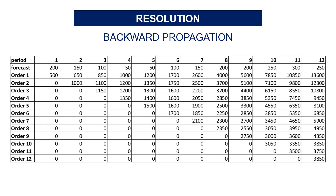For the backward calculation, we use the table here to conduct a visual resolution of the algorithm using the rules explained before. It starts with the last month — month 12 — where we are producing in month 11 for month 12. Then we move to month 10: the cheapest solution is to produce in month 9 for months 9 and 10. Then we move to month 8: the cheapest solution is to produce from month 6 for the 3 following months. And at the end, the cheapest solution to reach month 6 is to start in month 1 and produce from months 1, 2, 3, 4, 5, and 6.